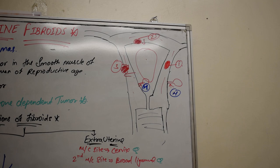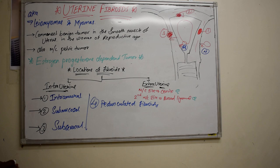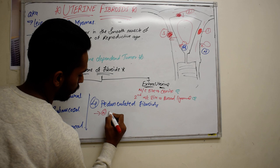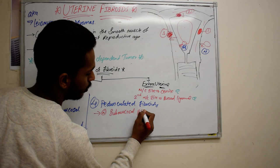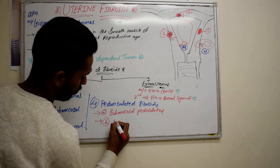Pedunculated fibroids have two subtypes. If the fibroid on a stalk is going inward towards the uterine cavity, we call it submucosal pedunculated. If it is going outwards with the help of the stalk, we call it subserosal pedunculated.